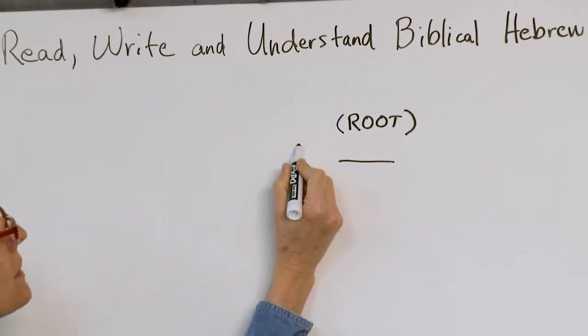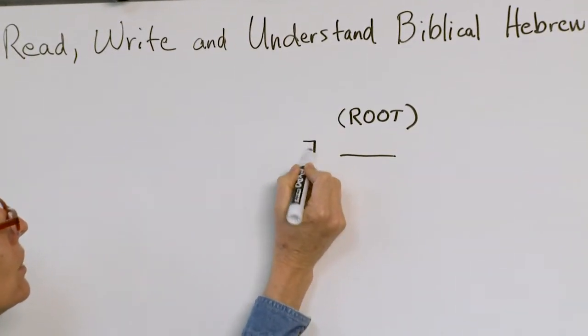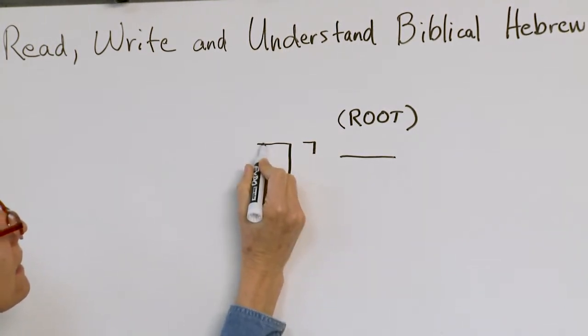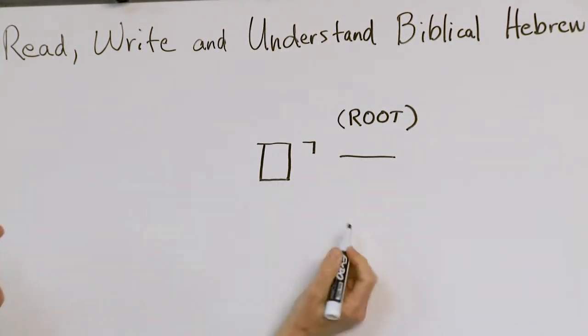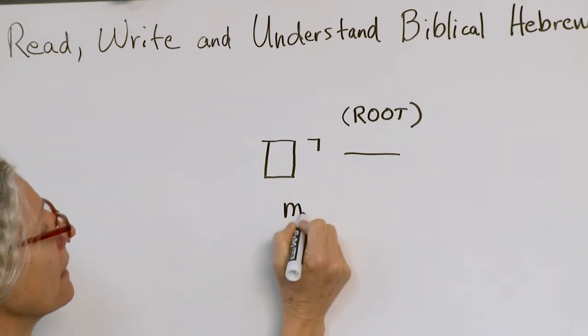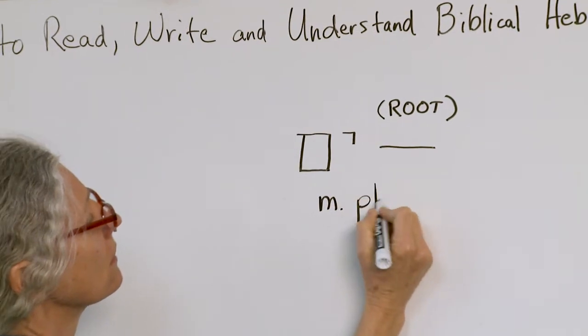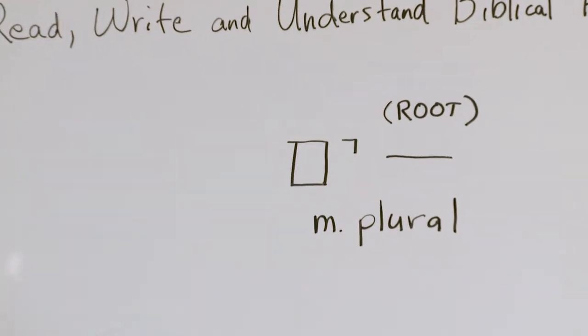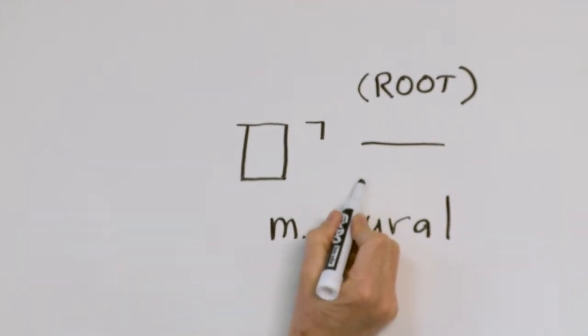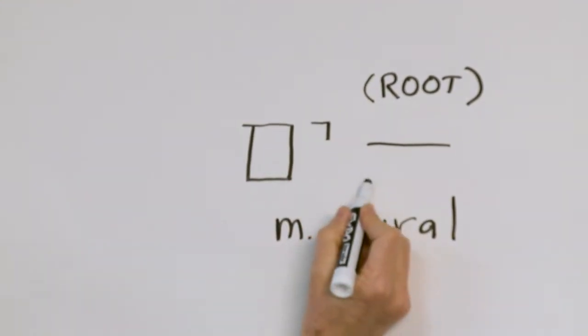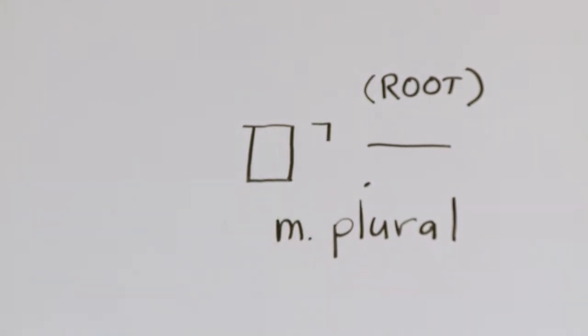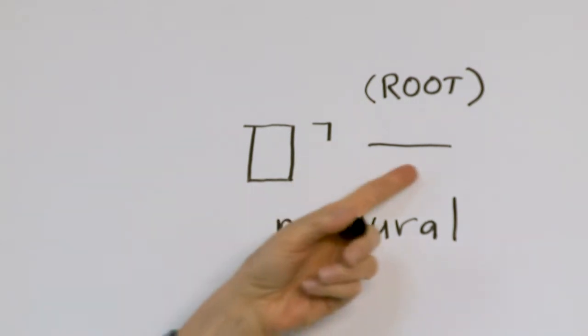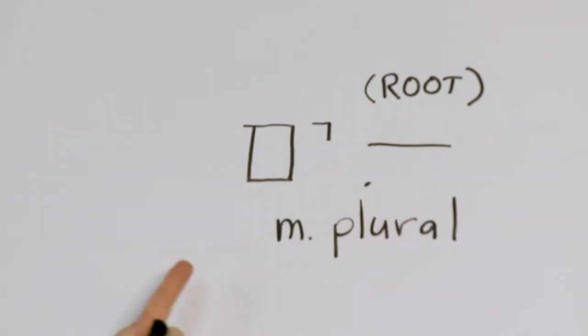If you have a yud and a mem sofit, that makes the root, which would be a noun in this case, masculine, plural. Okay, so that's pronounced with a chirek, im. Everybody say im. Im. Okay, that makes the root noun masculine, plural.